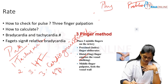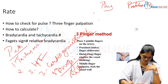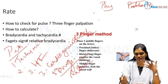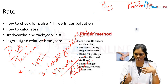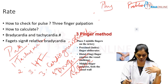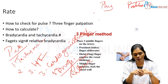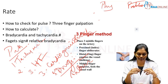Drugs that can cause tachycardia include salbutamol, atropine, and nifedipine.